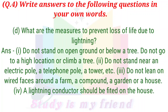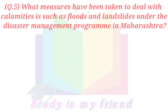D) What are the measures to prevent loss of life due to lightning? Answer: 1. Do not stand on open ground or below a tree. 2. Do not go to a high location or climb a tree. 3. Do not stand near an electric pole, a telephone pole, a tower, etc. 4. Do not lean on wired fences around a farm, a compound, a garden, or a house. 5. A lightning conductor should be fitted on the house.